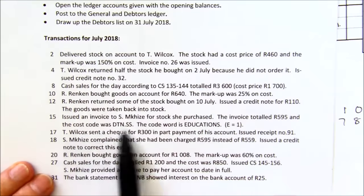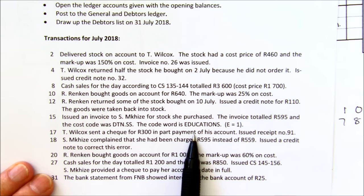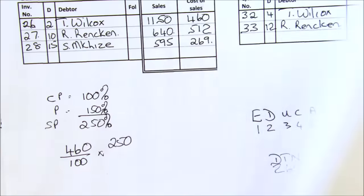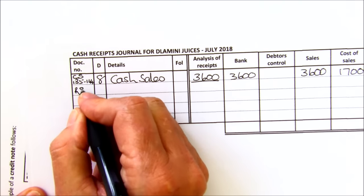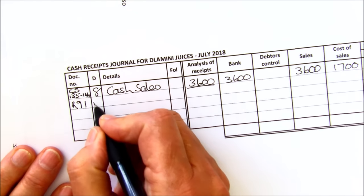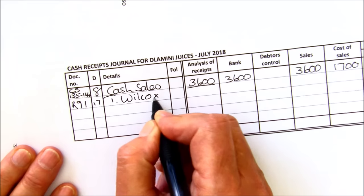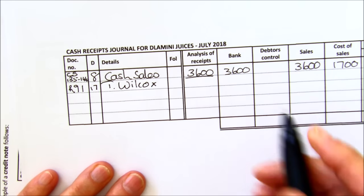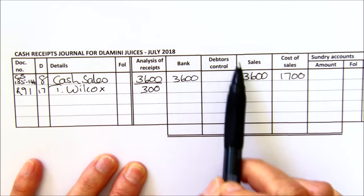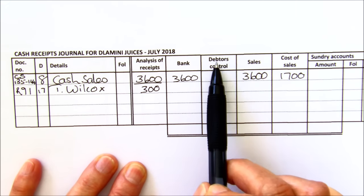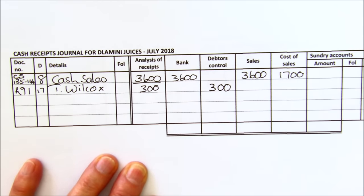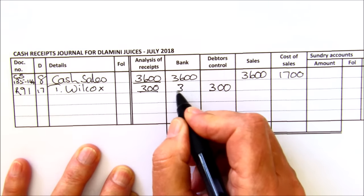T. Wilcox sent us a check for 300 Rand in part payment. You are now receiving cash, so we're going to go back to our cash receipts journal. We need his name and proof that he's paid, so we issue him with a receipt. The date is the 17th, and we're getting it from T. Wilcox. That check will first go into your till — the 300 Rand. We bring in a new column called debtors control to record the money received from your debtors. That double entry will go into the debtors control, and then you deposit it into the bank.